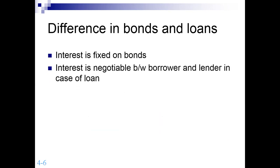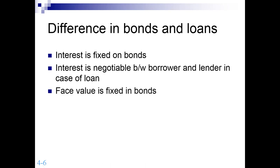Interest is fixed on bonds. Whatever is decided at the initial stage — once the company announces their bond — they commit in terms of coupon rate: this is the interest payment we will make on these bonds. In a loan, by contrast, the interest is negotiable between borrower and lender; it is not decided beforehand but during negotiation. Face value is also fixed in bonds, but in a loan there is no fixed value — you can take a loan of one million, two million, five million, or whatever amount you decide.